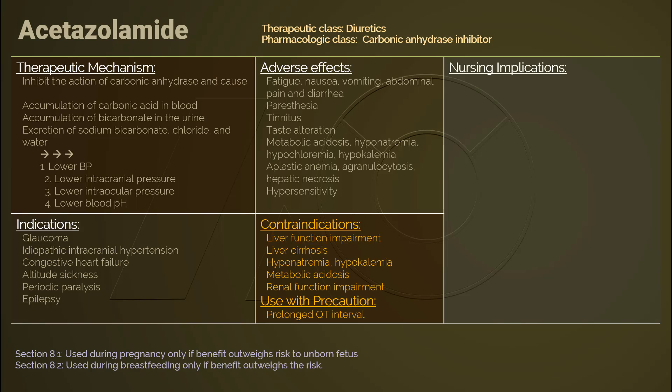Acetazolamide is contraindicated in patients with liver cirrhosis and advanced liver function impairment, kidney function impairment, as well as metabolic acidosis and electrolyte imbalances. Drug allergies to medications in this group or to sulfonamide is another contraindication for using acetazolamide.